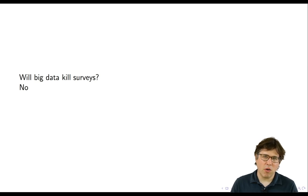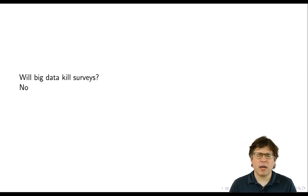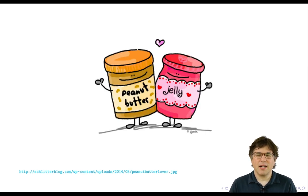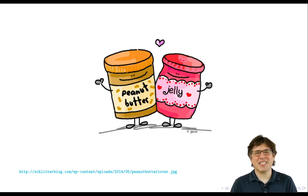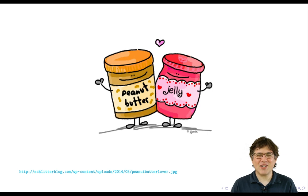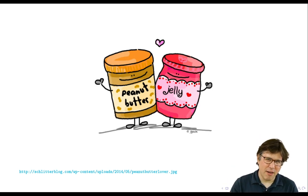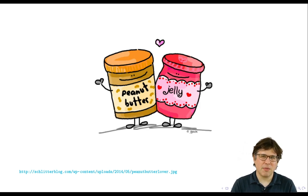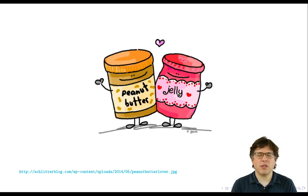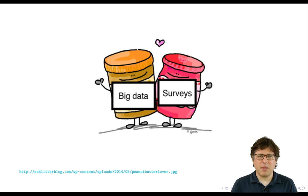Two things that as you have more of one you want more of the other. So I think a better model for how you should think about surveys and big data is peanut butter and jelly. For all the Americans watching this video, you know that peanut butter and jelly are delicious together. If you did not grow up eating peanut butter and jelly you might think it's a strange combination, but you should definitely try it. They're complements, they're not substitutes.